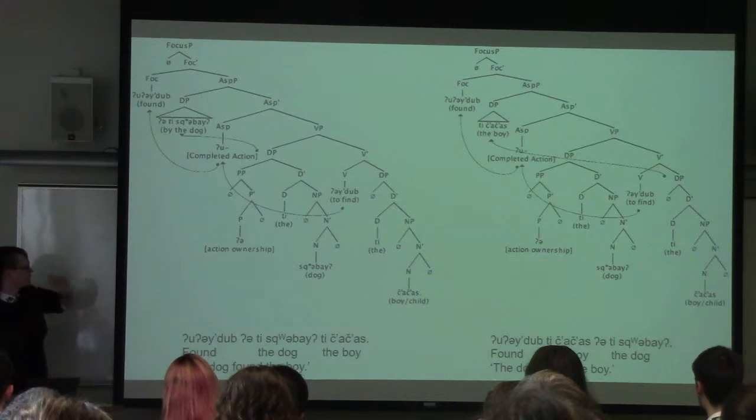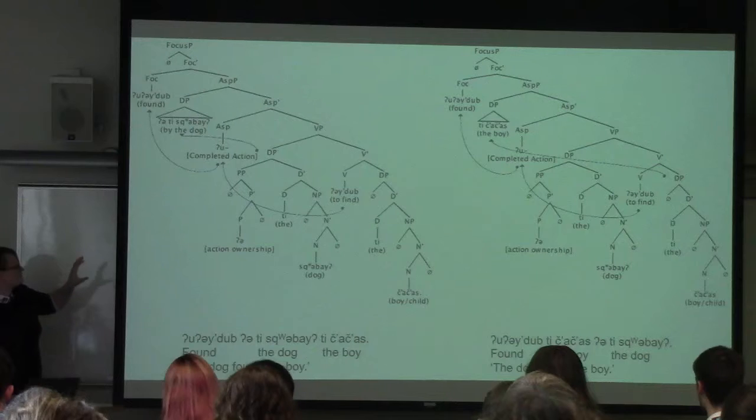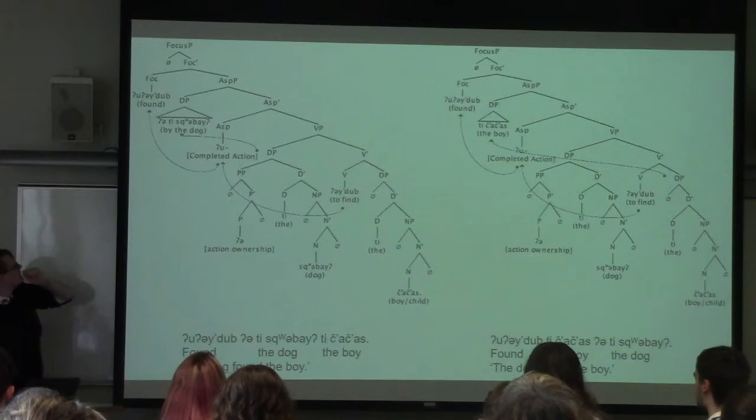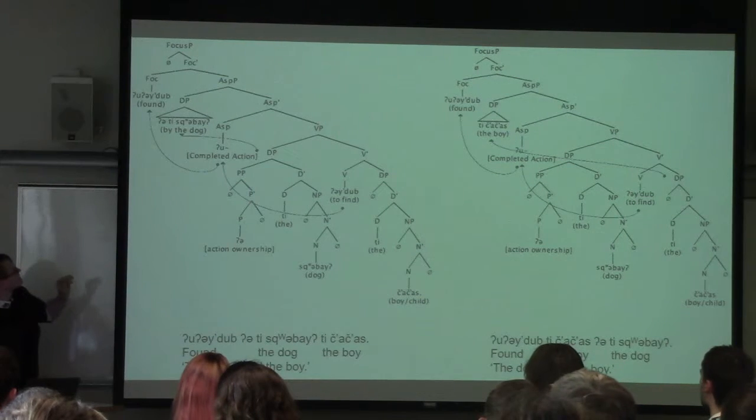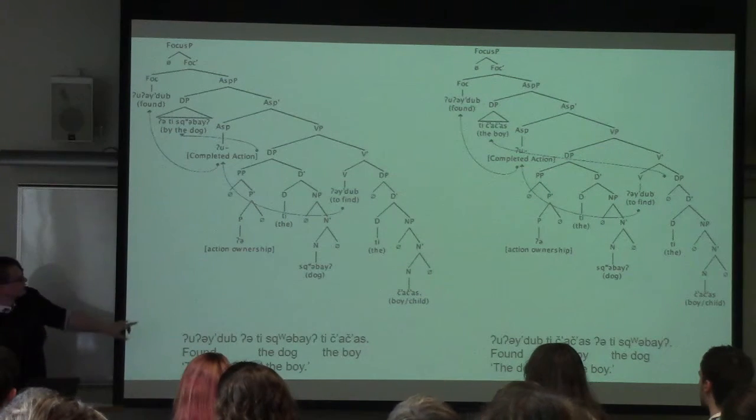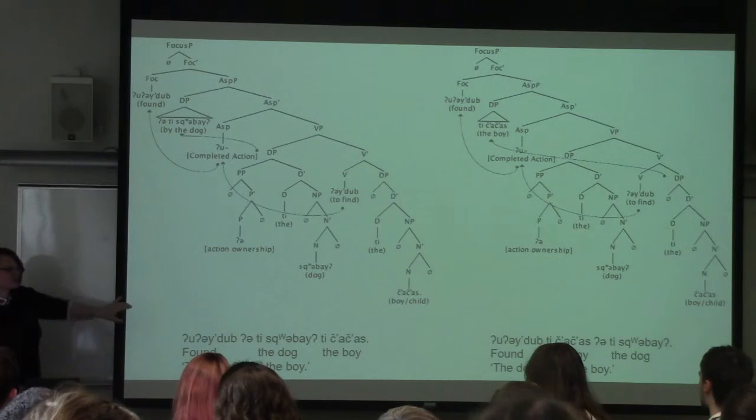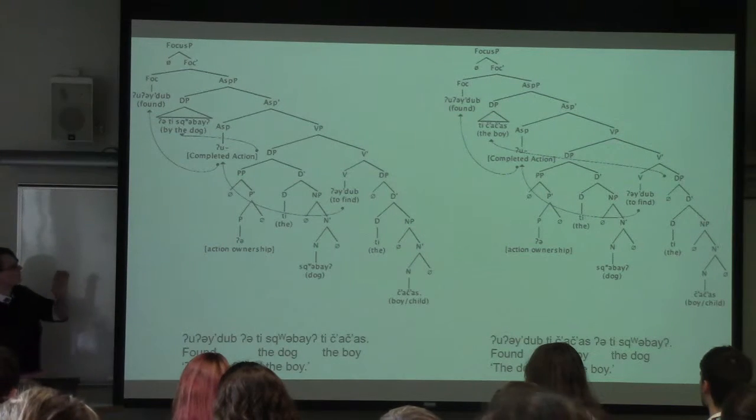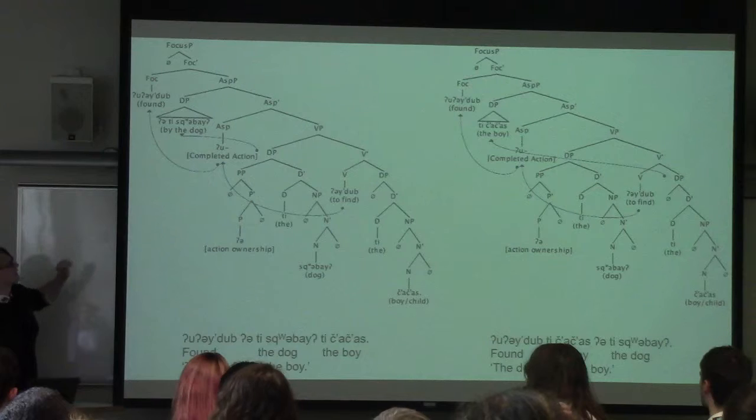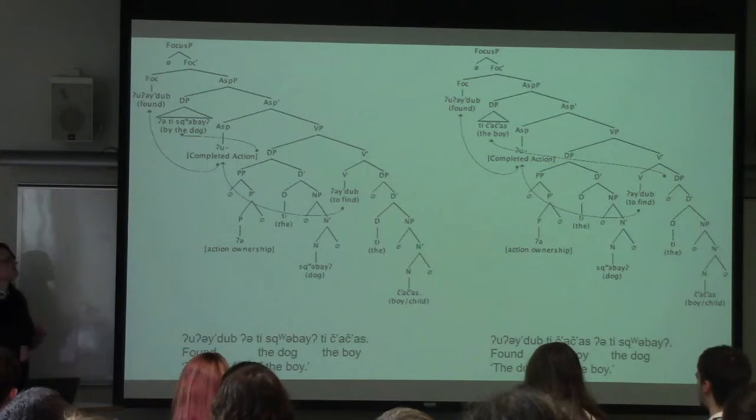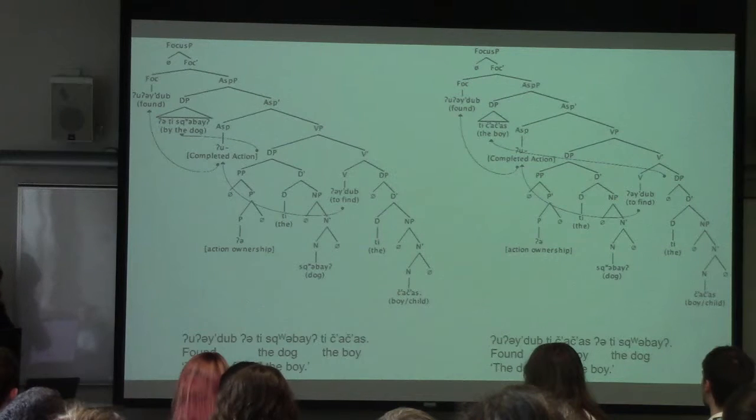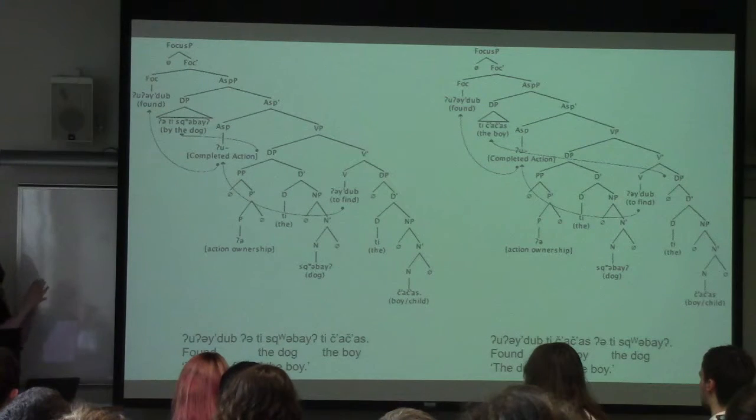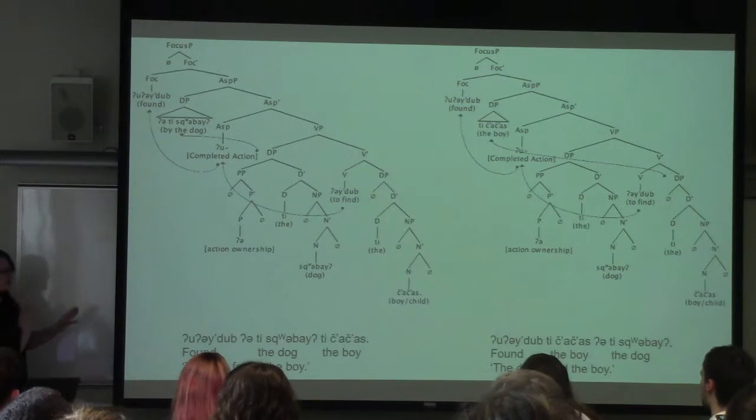But in order to have that construction stay the same while still allowing the object and the subject to switch places, you have to have the verb be able to move to a place higher than the two that are switching places. So the verb can move up into the focus position so that it can be verb subject object or verb object subject just as easily as one or the other.